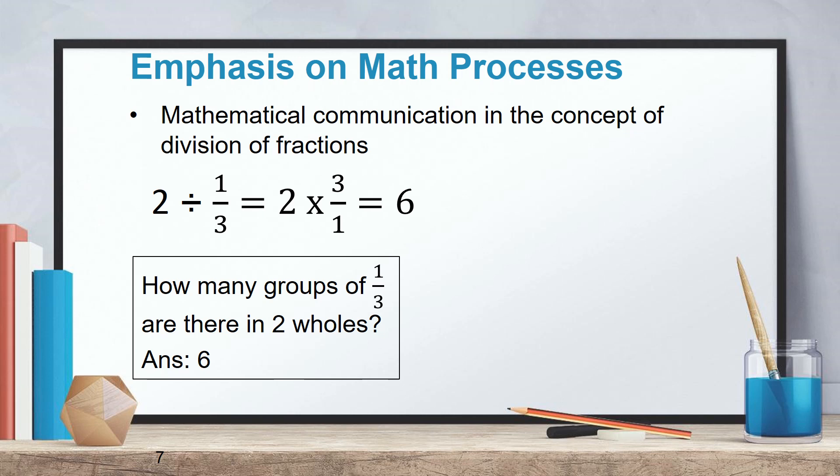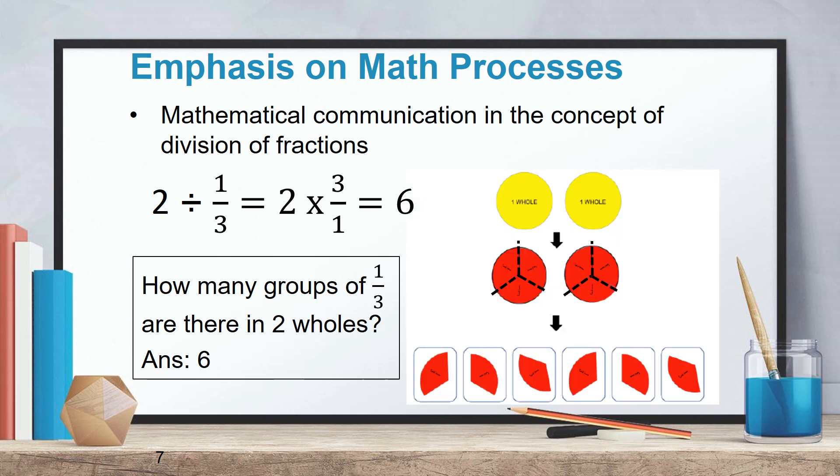The answer is 6. How does it look like? You will see the diagram on the right. There are 2 wholes. If we divide the wholes equally into thirds, then we'll notice all together we will get 6 thirds. So that is the meaning of this division.